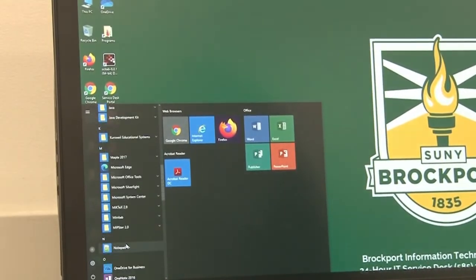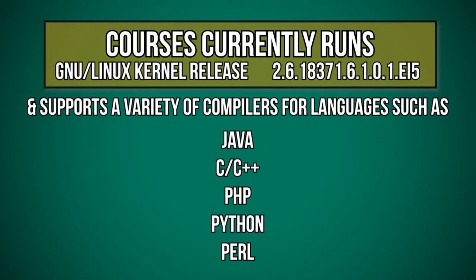Courses currently runs GNU Linux kernel release 2.6.18371.6.1.0.1.e15 and supports a variety of compilers for languages such as Java, C, C++, PHP, Python, and Perl. Courses also serves as the web server for academic purposes and hence is available for hosting personal web pages and developing web applications.